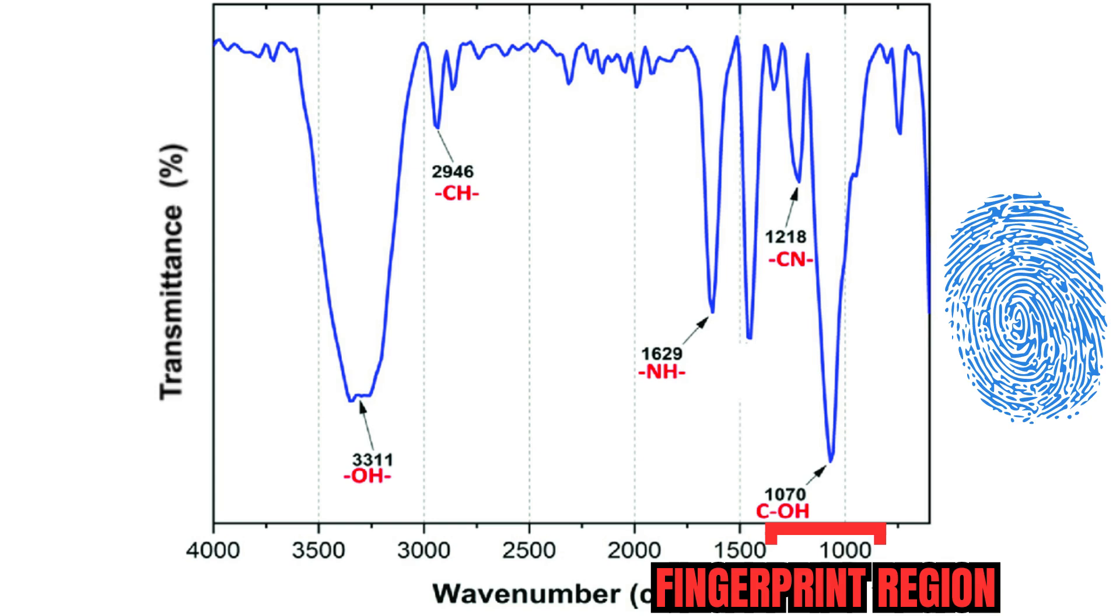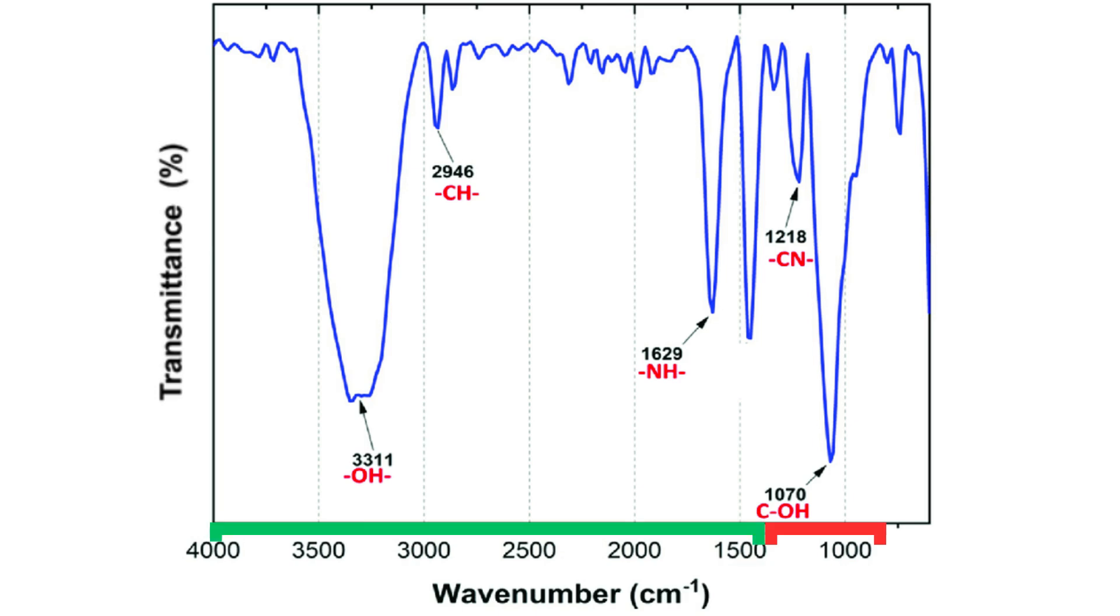The region between 600 and 1400 is called the fingerprint region and tends to be complex with multiple bands that overlap each other. Above this region is where one can manually identify the presence of most functional groups.